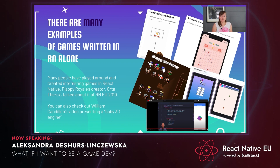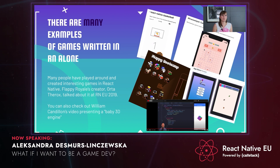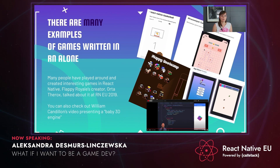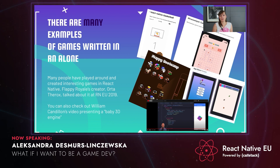There are many games written in React Native alone. I myself saw a presentation of Flappy Royale on the stage of React Native EU 2019, written in React Native alone. There's a Minesweeper game, a basketball game — you can find all kinds of great examples on GitHub. I would also like to recommend watching William Candelan's YouTube channel called 'Can it be done in React Native?' — and the answer is usually yes. He created a baby 3D engine and shows how to use it, with just React Native and Reanimated.